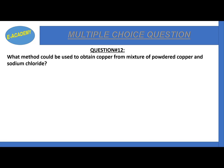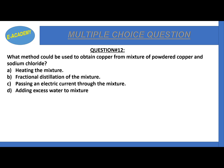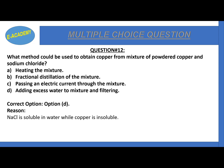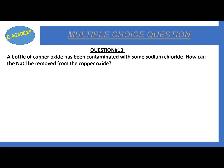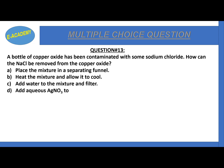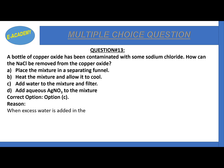Question number 12: What method could be used to obtain copper from a mixture of powdered copper and sodium chloride? The correct option is D: add excess water to the mixture and filter. NaCl is soluble in water while copper is insoluble. Question number 13: A bottle of copper oxide has been contaminated with NaCl. How can NaCl be removed? The correct option is C: add water to the mixture and filter. NaCl dissolves in water while copper oxide remains insoluble; the copper oxide is obtained as a residue on filter paper.